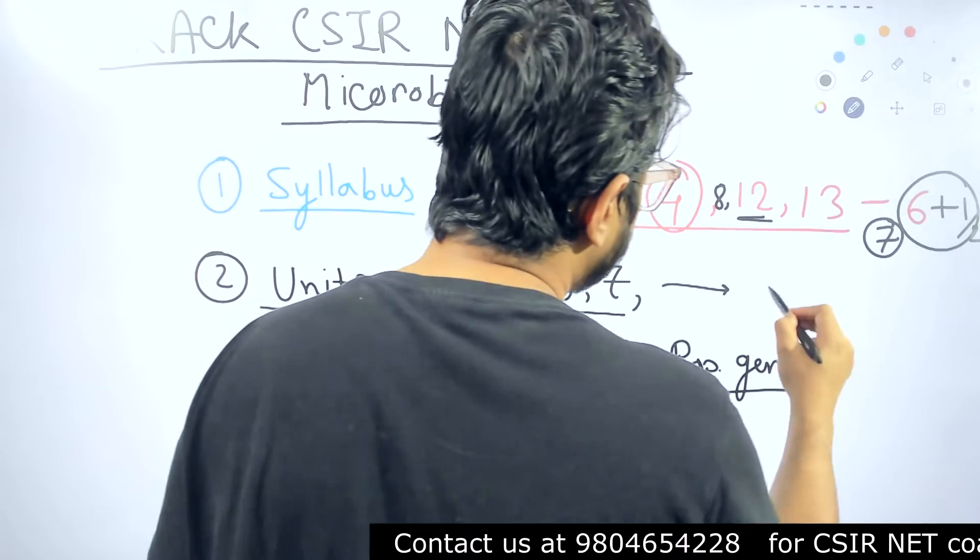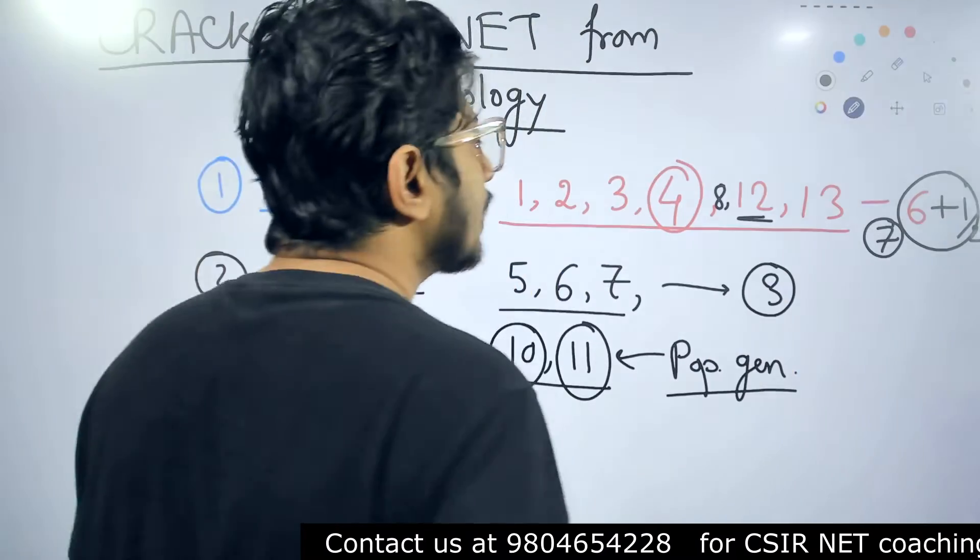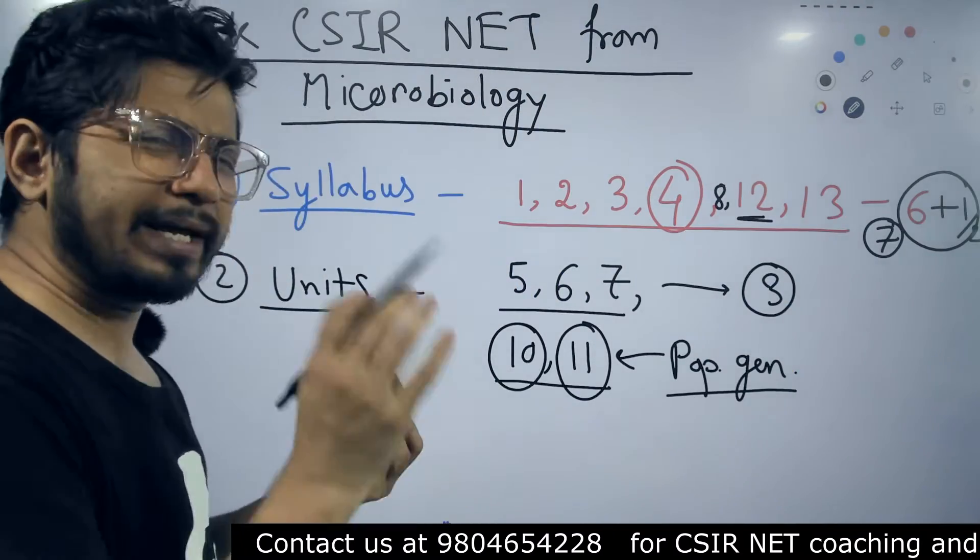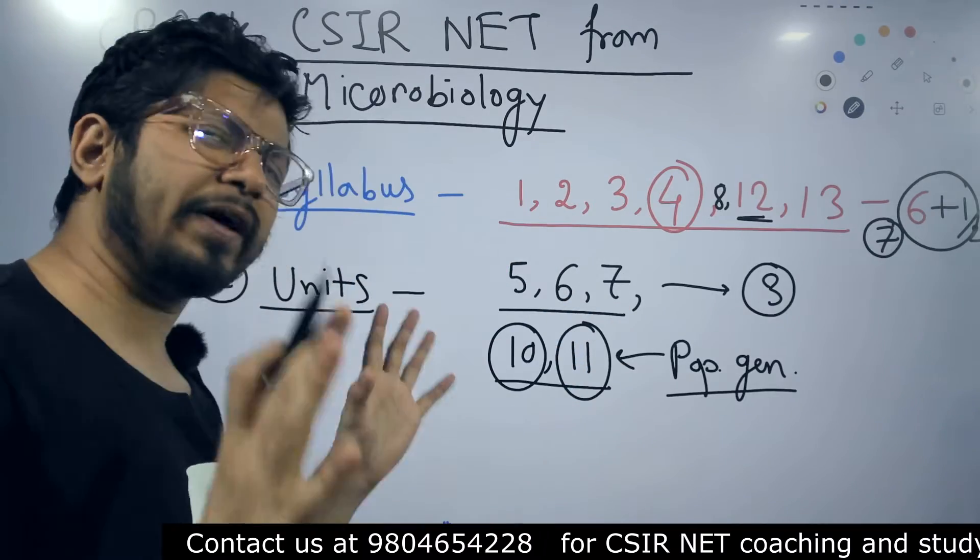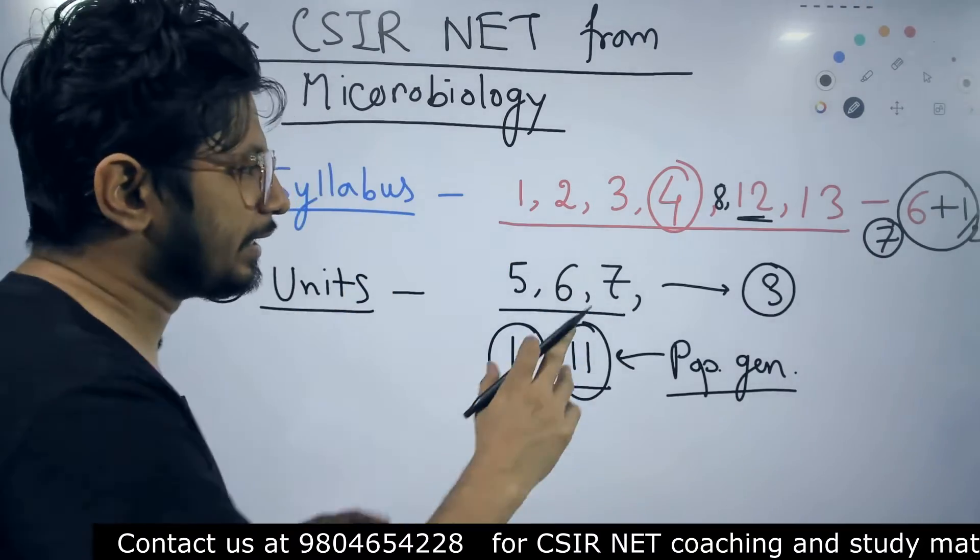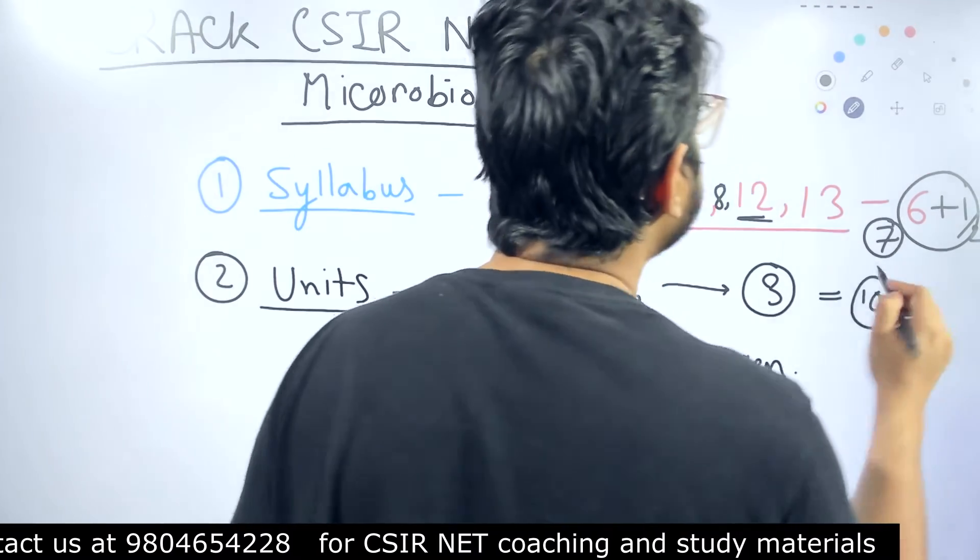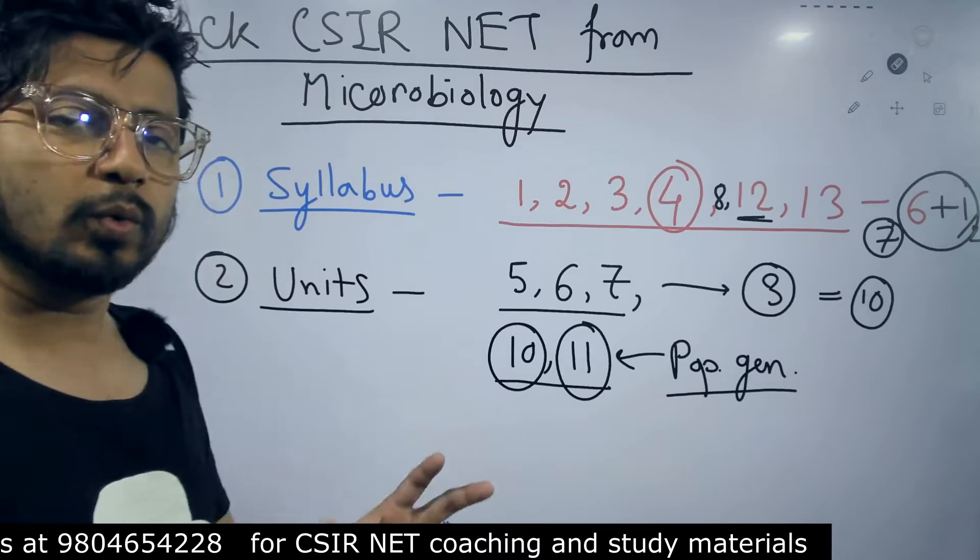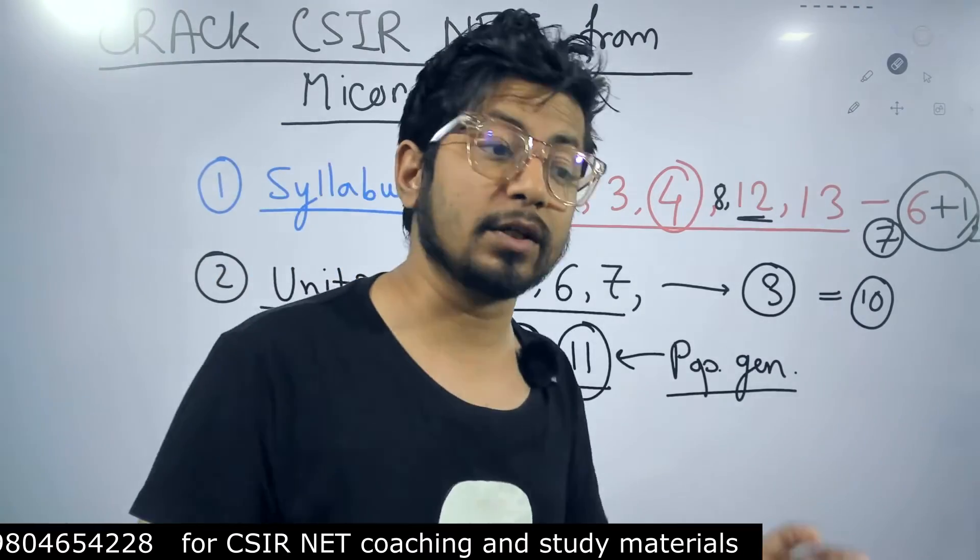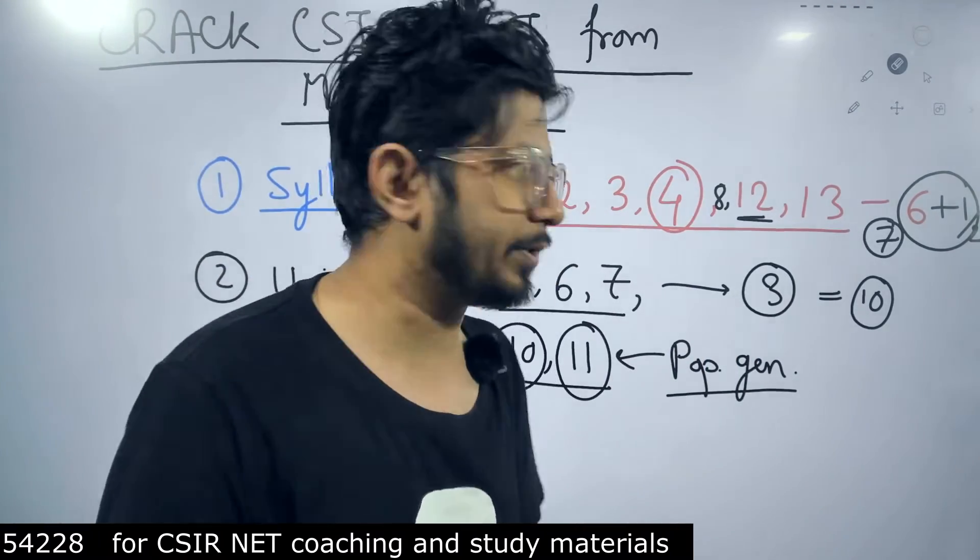Six to seven units that is common based on your syllabus. Only three of them you can easily prepare just by putting some extra effort - not very much though, but little extra effort can clear these three more units for you. Seven plus three will give you ten units, which is enough for anyone to appear in CSIR NET examination with the idea of qualifying the examination.